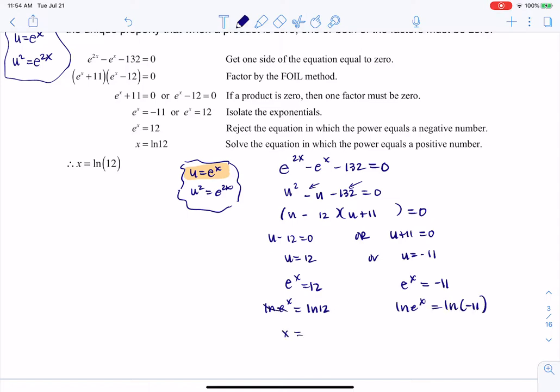These are going to cancel, so I get x equaling ln 12. And I am not allowed to take the log of a negative number, so I don't get a solution. It does not exist over there. And there is my answer.